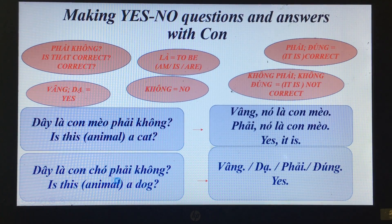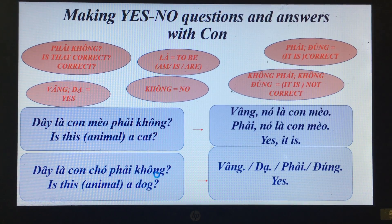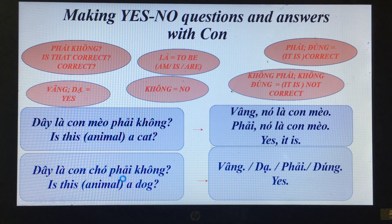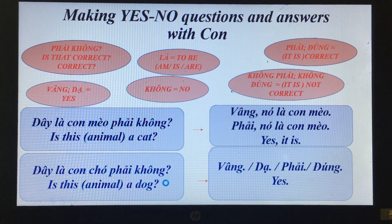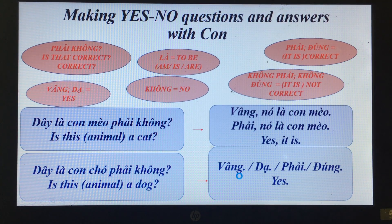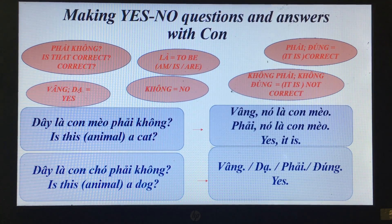'Đây là con chó, phải không?' — Is this animal a dog? You can answer: 'Vâng' or 'dạ' or 'phải' or 'đúng' — all mean yes.